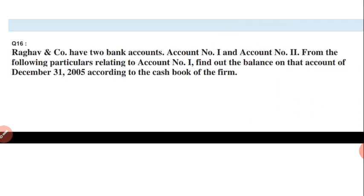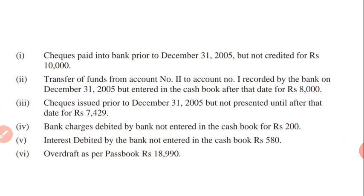So what is question number 16? Question number 16 is saying: Raghav and Company have two bank accounts — account number one and account number two. From the following particulars related to account number one, find out the balance on that account as of 31 December 2005 according to the cash book of the firm.